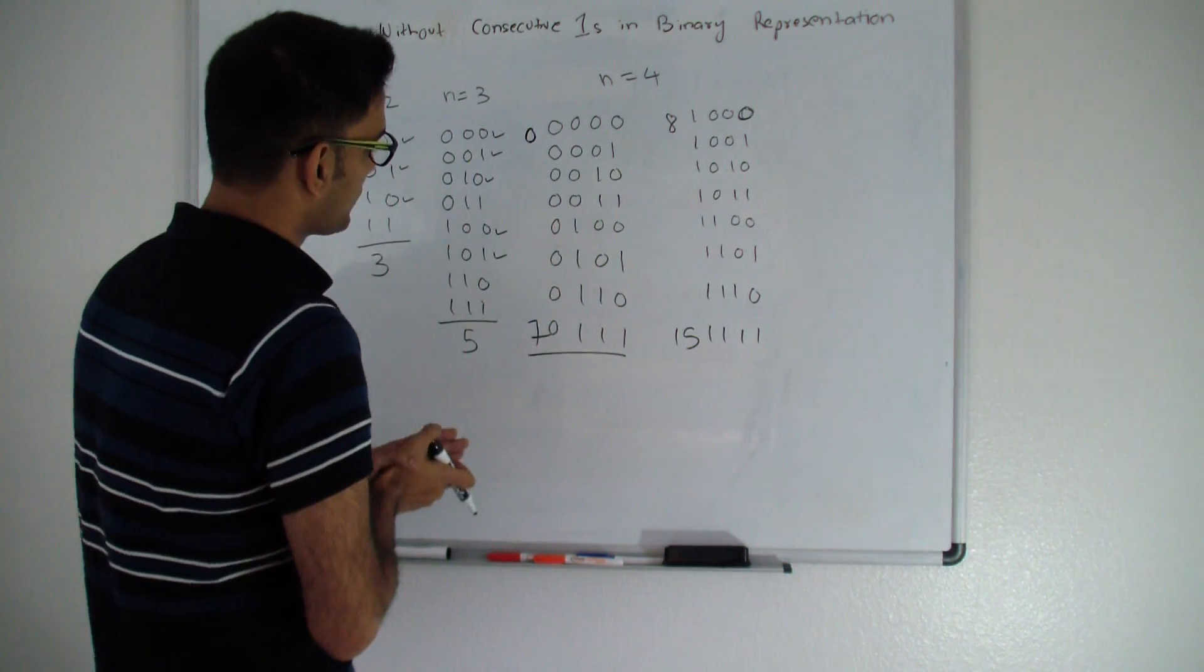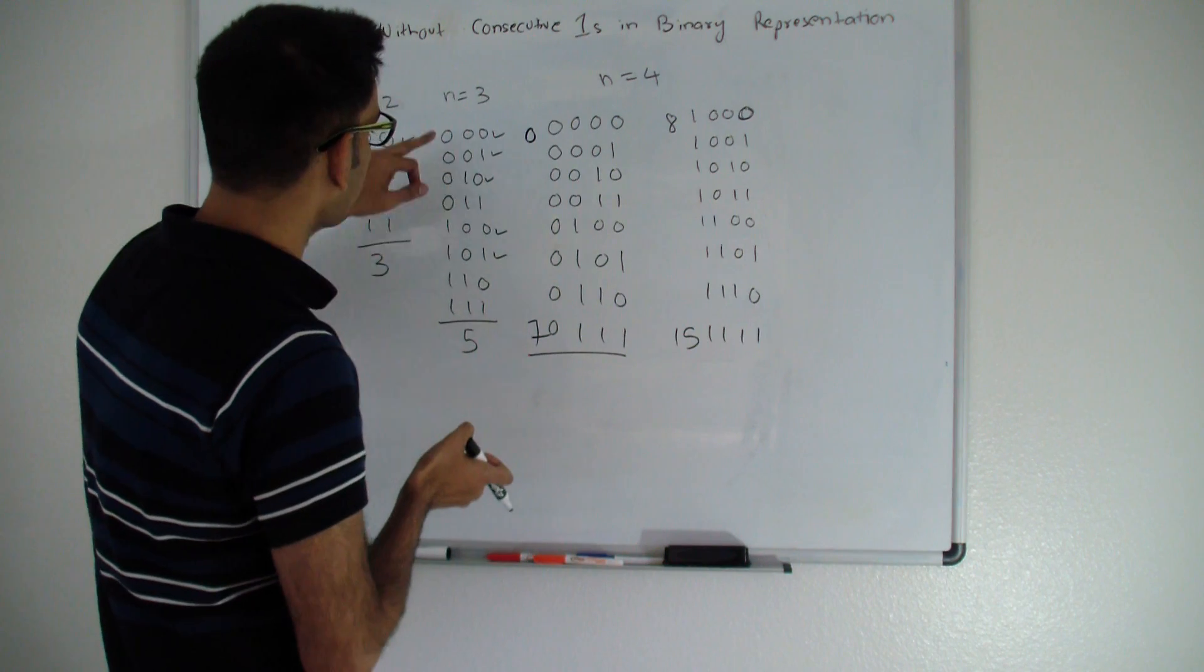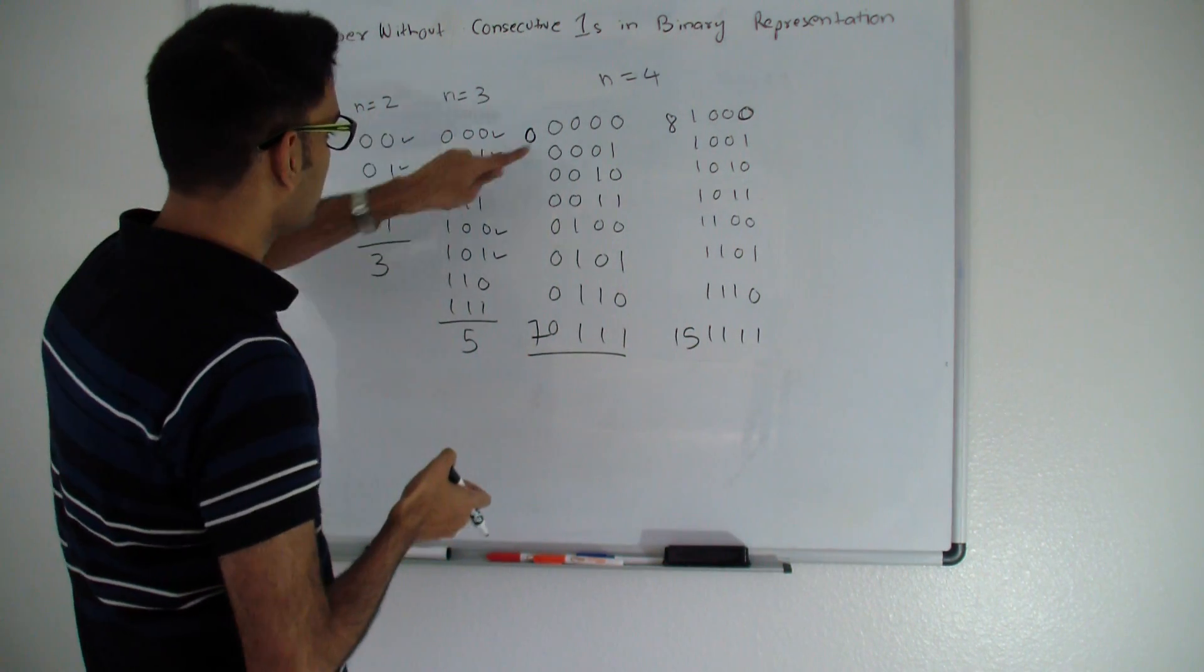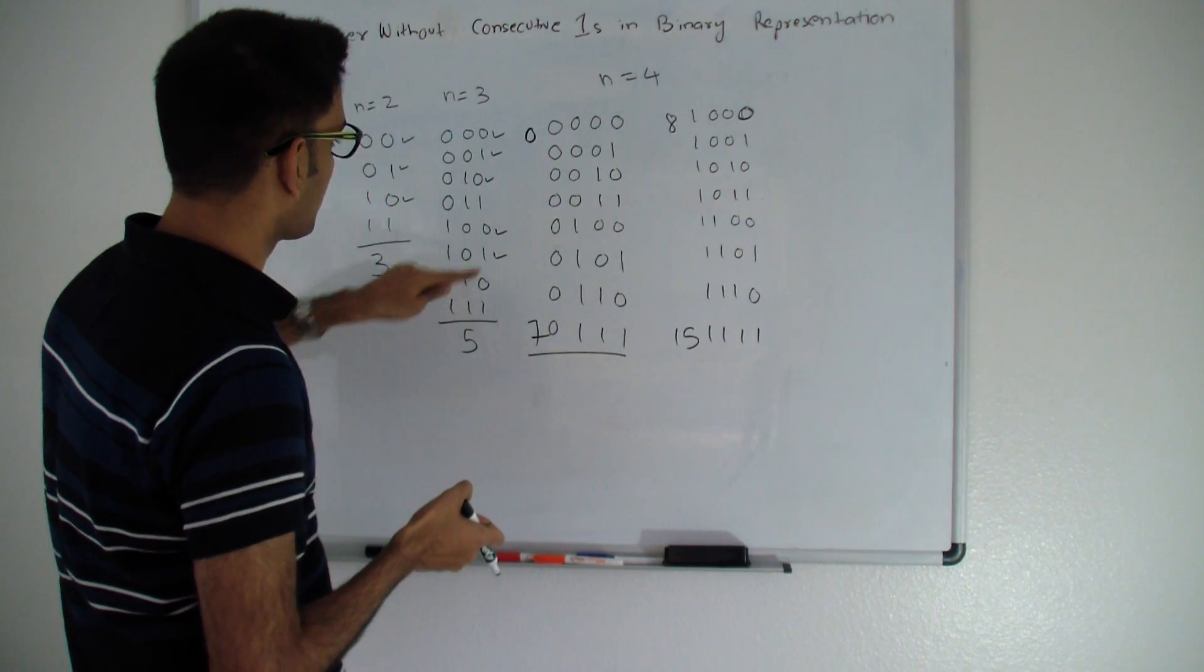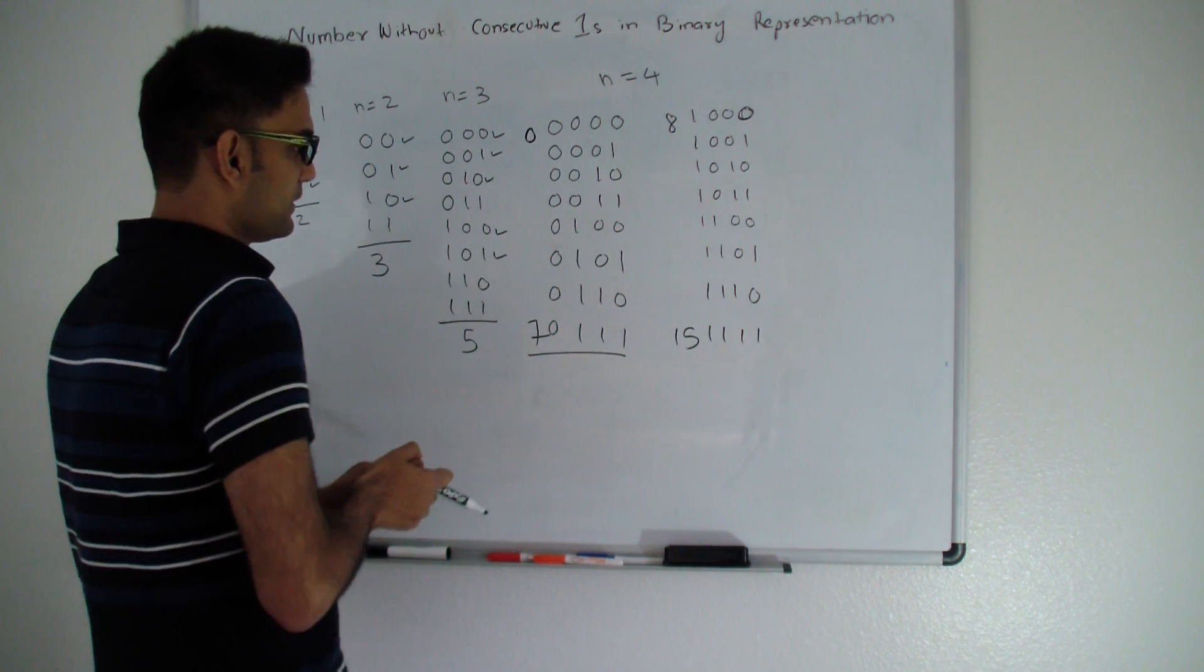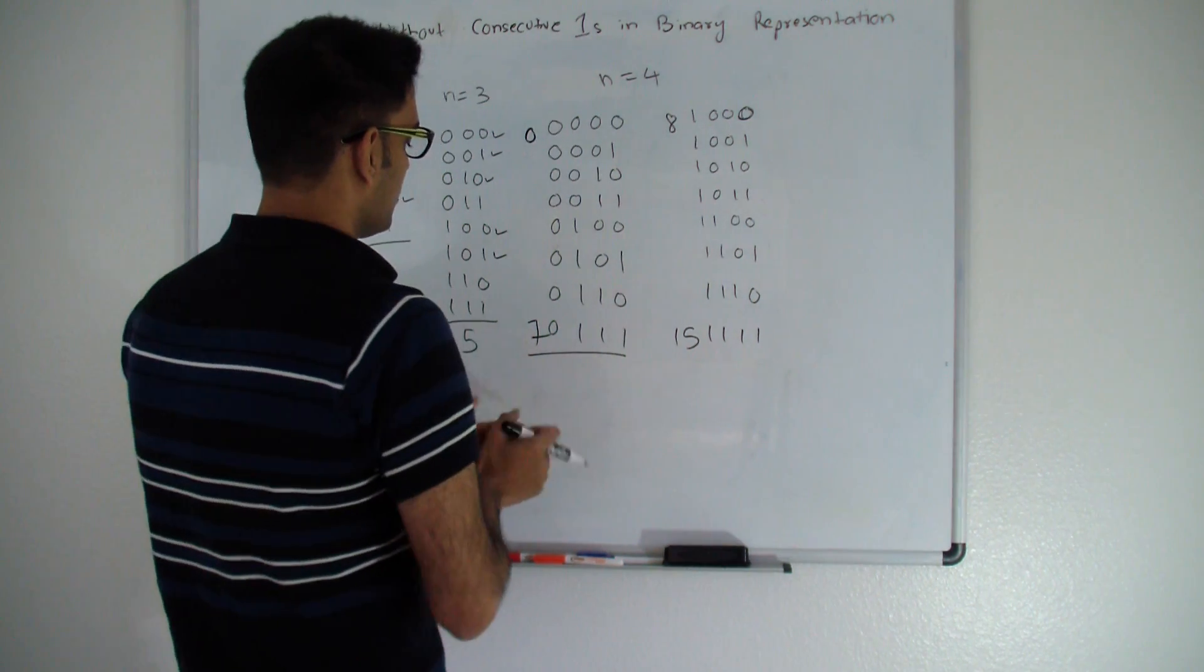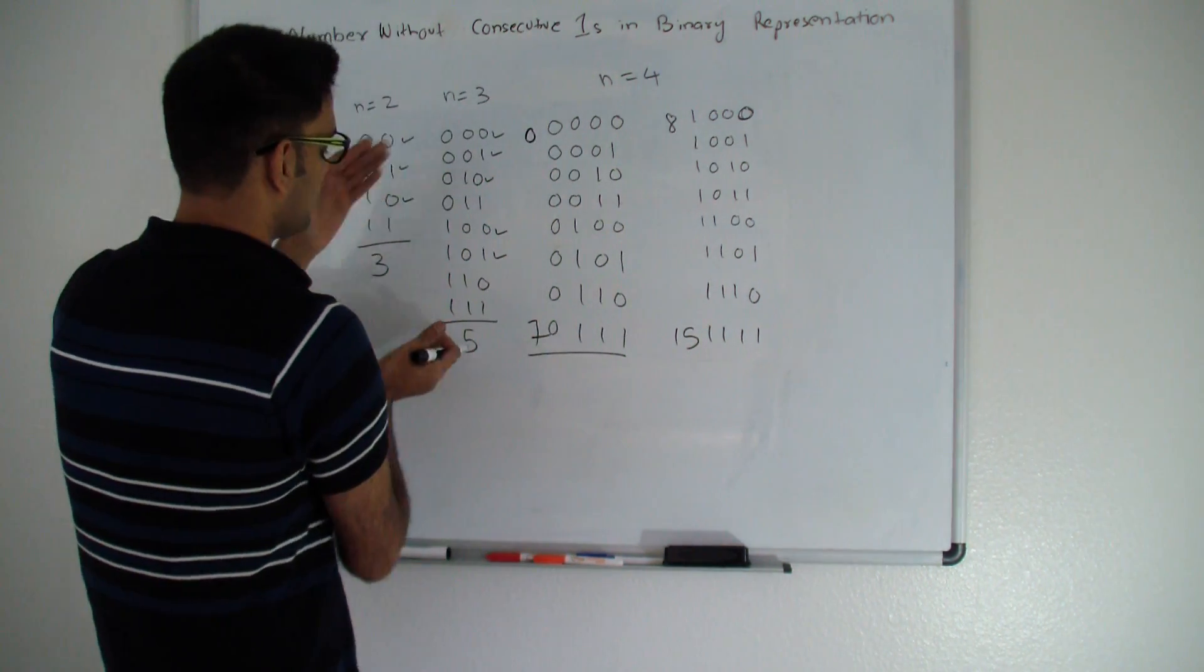For this half, notice how we are adding 0 in front of 3's binary representation. So these numbers are exactly same as this number, only that I added 0 in front of them. So the number of numbers who do not have consecutive 1's here will be exactly same as this guy. So 5.